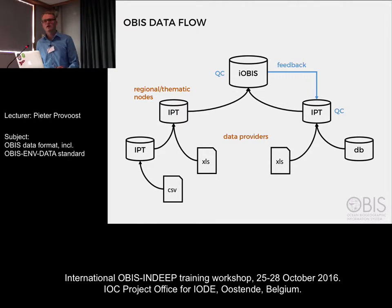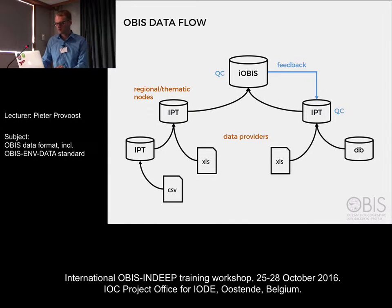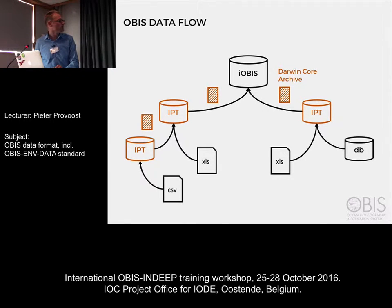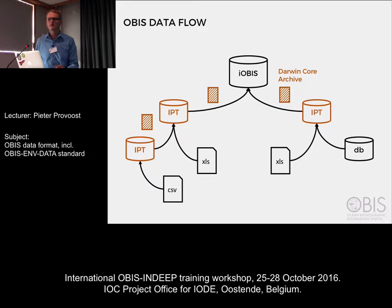These can be Excel spreadsheets, CSV files and so on. The only way that we can aggregate all these data into a central database is by assuming some common data format somewhere in the data flow. The way that the nodes are doing this is by publishing their data sets on some server software called IPT. Once the data set is published on IPT it becomes available as a so-called Darwin Core archive, and this is a format that OBIS can easily read and interpret.